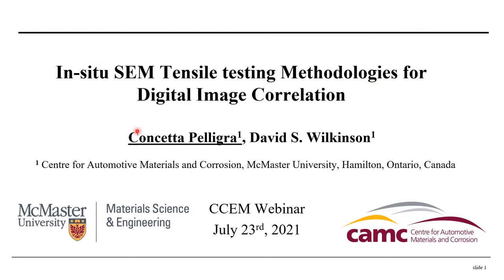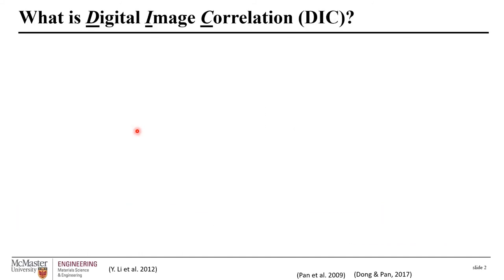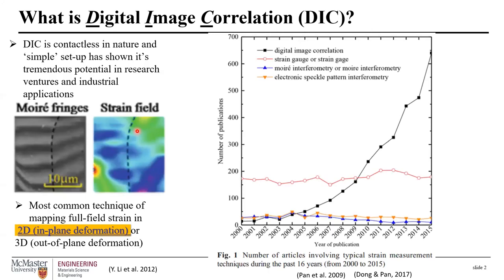My talk today is on in-situ SEM testing methodologies coupled with digital image correlation, using a series of images acquired within the SEM. Digital image correlation, or DIC, is a method that compares a change in grayscale intensity in the specimen in its undeformed to deformed state to create strain maps either in-plane in 2D or out-of-plane in 3D. This contactless technique was invented in the early 1980s by researchers at the University of South Carolina, but only started to gain popularity after 2005.